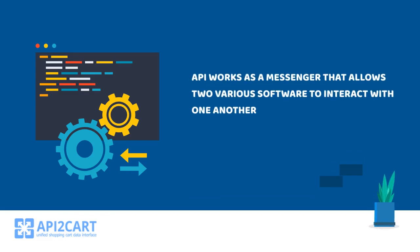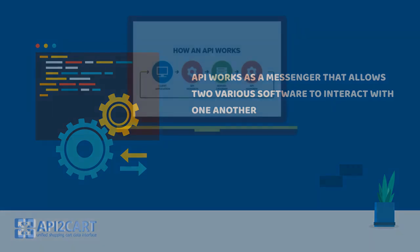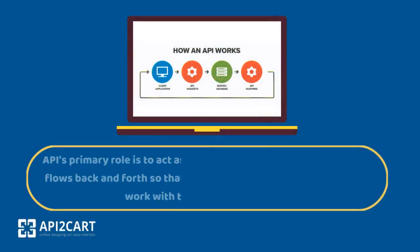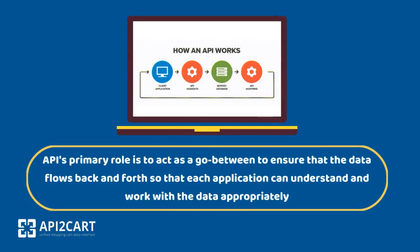An API works as a messenger that allows two various software to interact with one another. Its primary role is to act as a go-between to ensure that data flows back and forth so that each application can understand and work with the data appropriately.